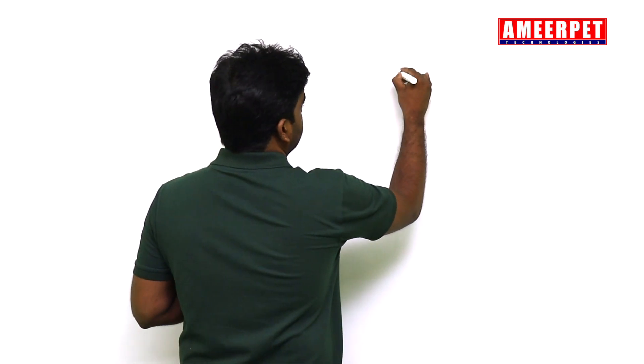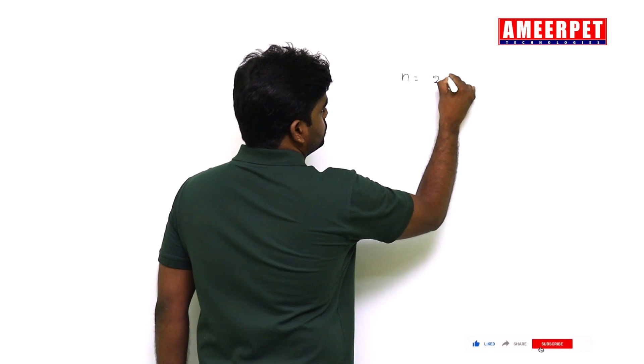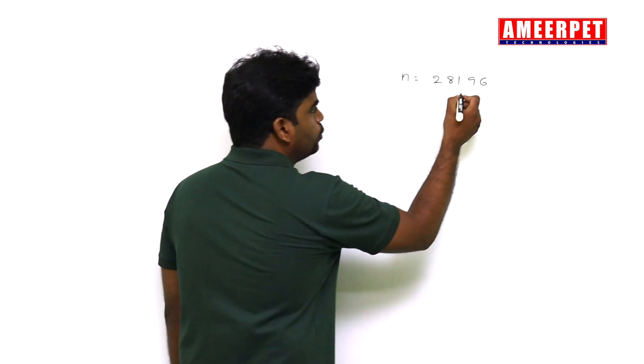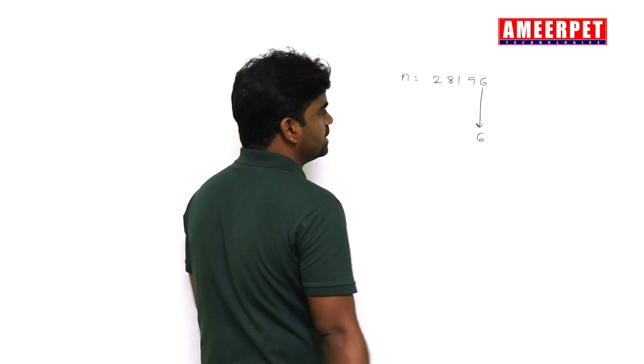Hi everyone, this is Renvas, welcome to Amirpe Technologies. In this video I am going to explain how to find the smallest digit in a given number. Here I am taking one number: N equals 281961. I just want to display the smallest digit in the given number. As we know how to get digit by digit from the number — suppose 6 is a digit.